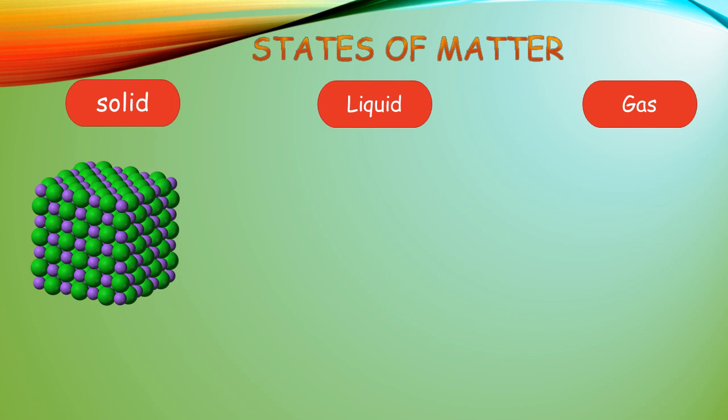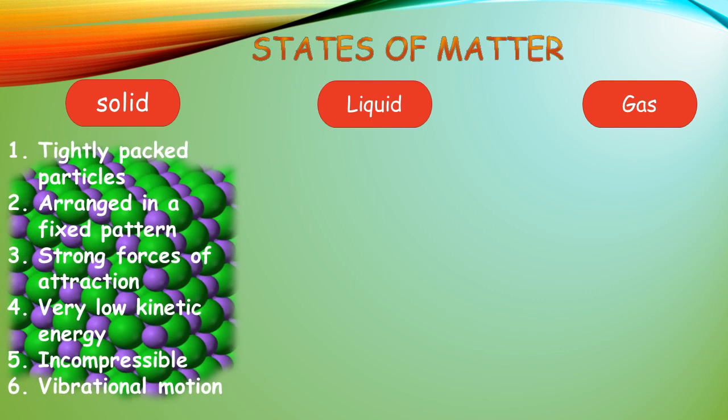In solids, as shown in the diagram, the particles are tightly packed together in a fixed pattern, leaving no spaces behind. That's why they are incompressible. The strong forces of attraction hold them together so they cannot leave their positions and can only show vibrational motion. They have very high density owing to their tightly packed structure. In summary, in solids there are tightly packed particles arranged in a fixed pattern, held together by strong forces of attraction. The particles have very low kinetic energy, and solids are incompressible and can only show vibrational motion.